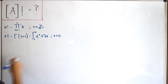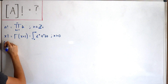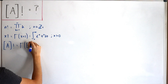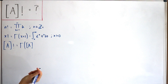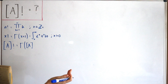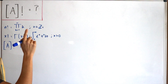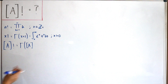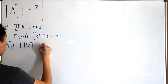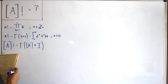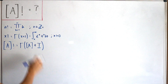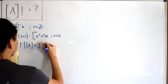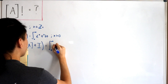Now we plug matrix A into the factorial definition using the gamma and integral representation. So A factorial equals gamma of A plus I — using the identity matrix I rather than writing plus 1, since we're dealing with matrices. The identity matrix has 1s on the diagonal and 0s elsewhere. This gives the integral from 0 to infinity of e to the negative t times t to the power of matrix A, dt.